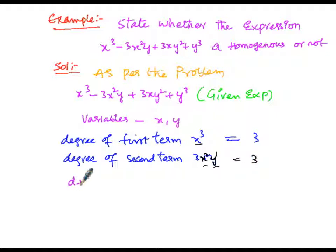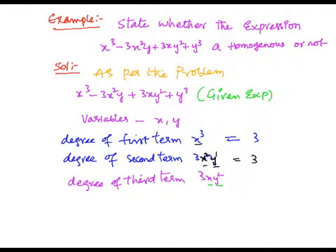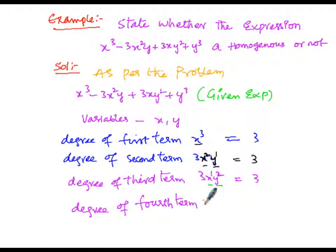Similarly, the degree of the third term, 3xy², has x with exponent 1 and y with exponent 2, so the degree is 1+2 = 3. The fourth term is y³, whose variable is y with degree 3. Therefore, all four terms of the given expression have the same degree, which equals 3.